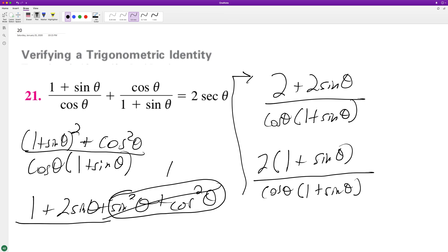We end up with 2 over cosine theta, and this is like 2 times 1 over cosine theta. And 1 over cosine theta is the same thing as secant theta, so that's how it becomes 2 secant theta. And that's how we prove it.